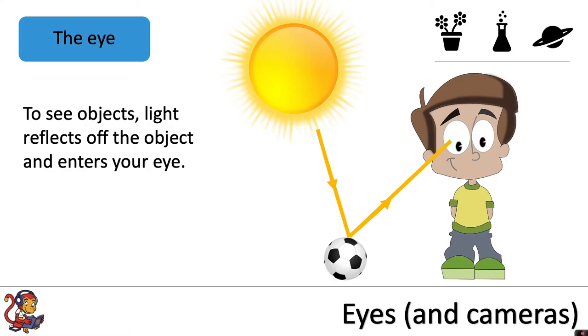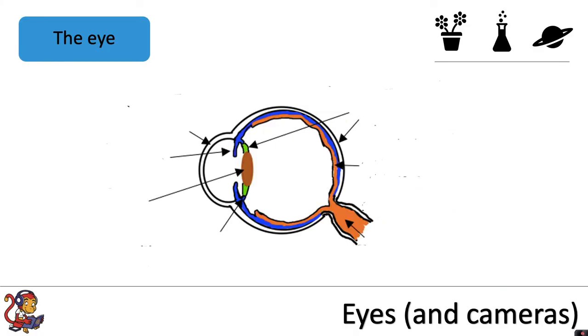To see objects, light reflects off the object and enters your eye. So let's look in more detail at the structure of the eye.